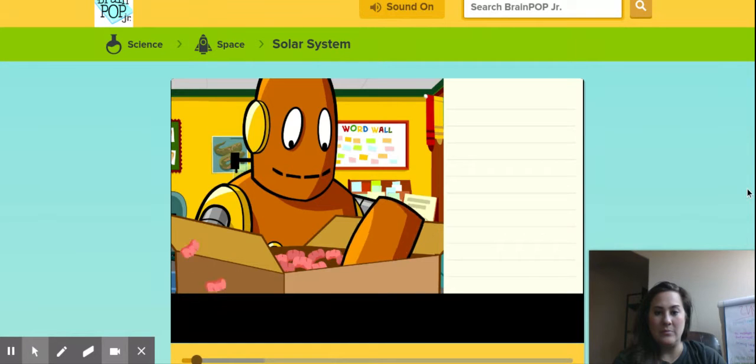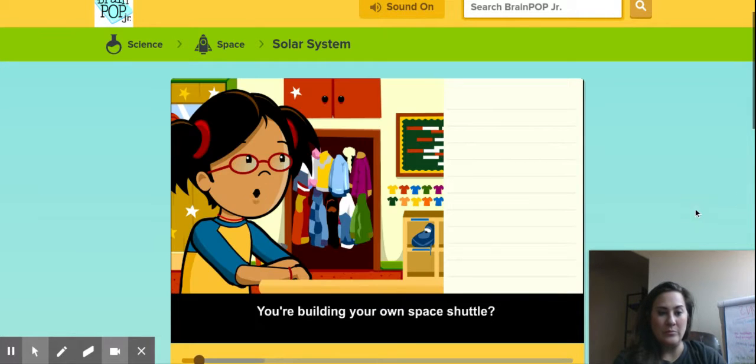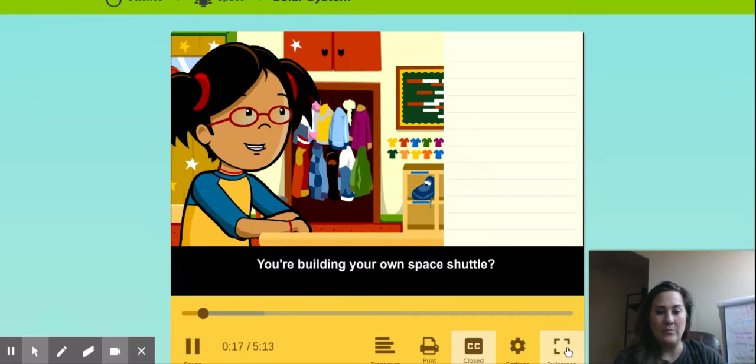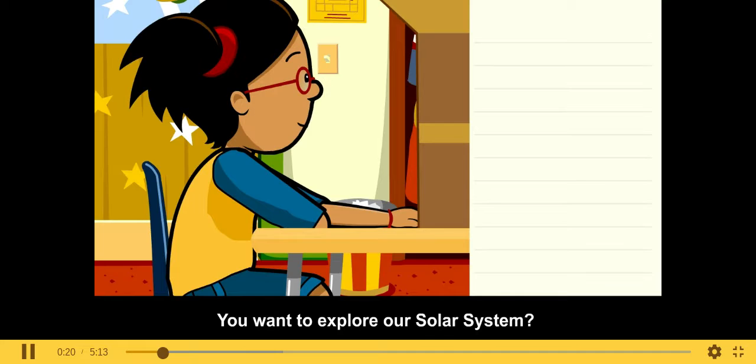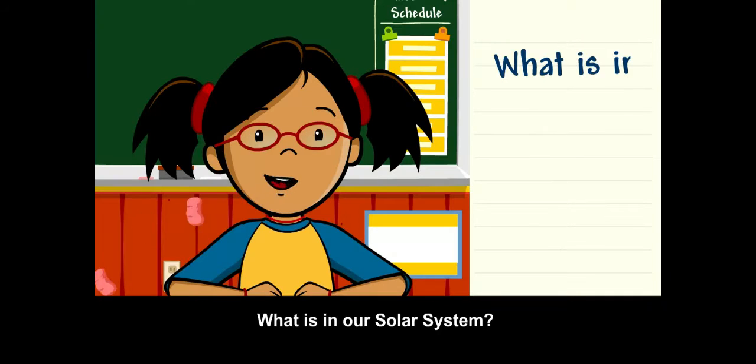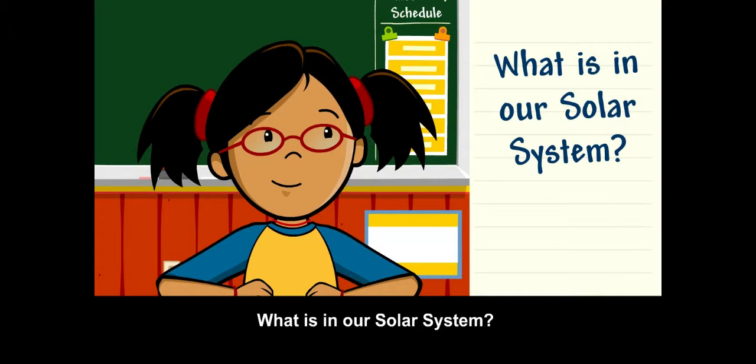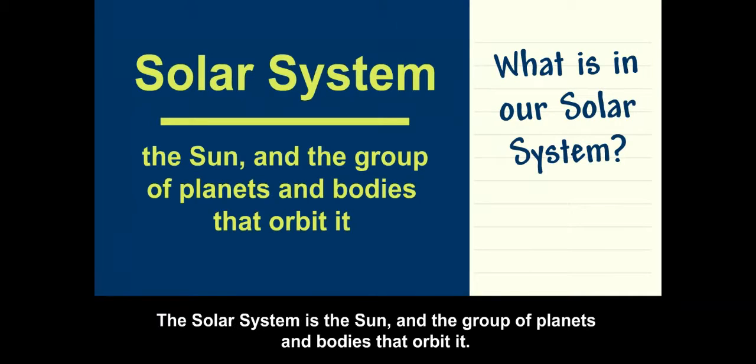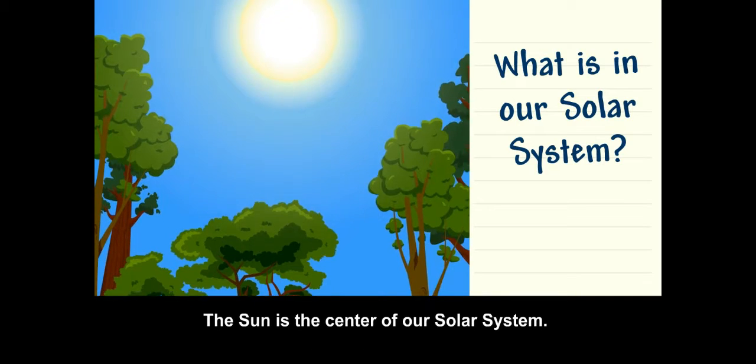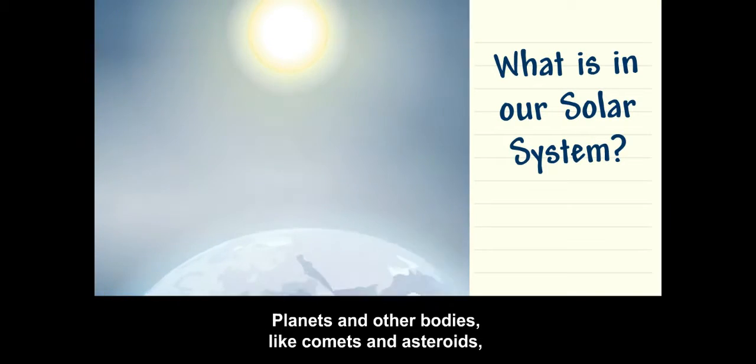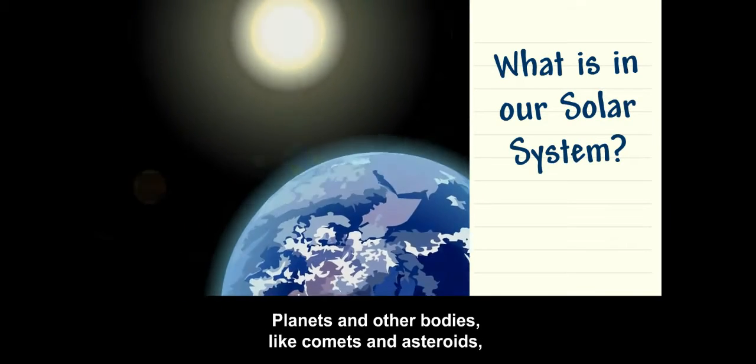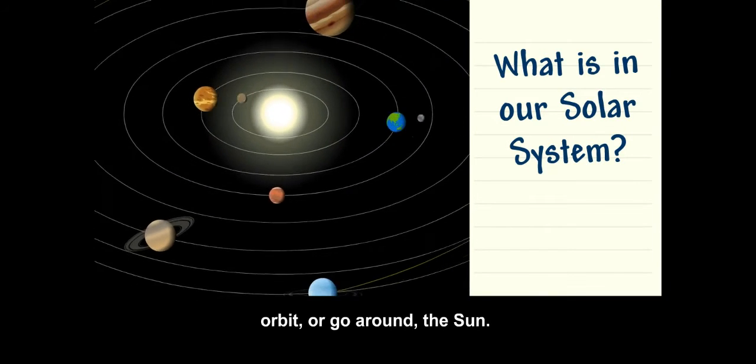What's up Moby? You're building your own space shuttle? You want to explore our solar system? What is in our solar system? The solar system is the sun and the group of planets and bodies that orbit it. The sun is the center of our solar system. Planets and other bodies, like comets and asteroids, orbit or go around the sun.